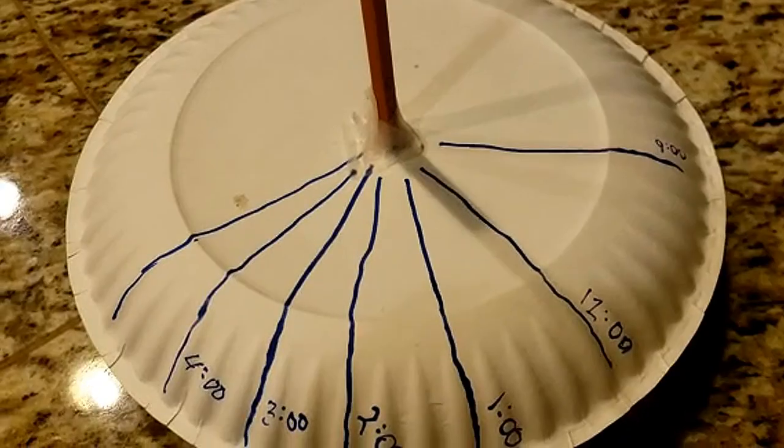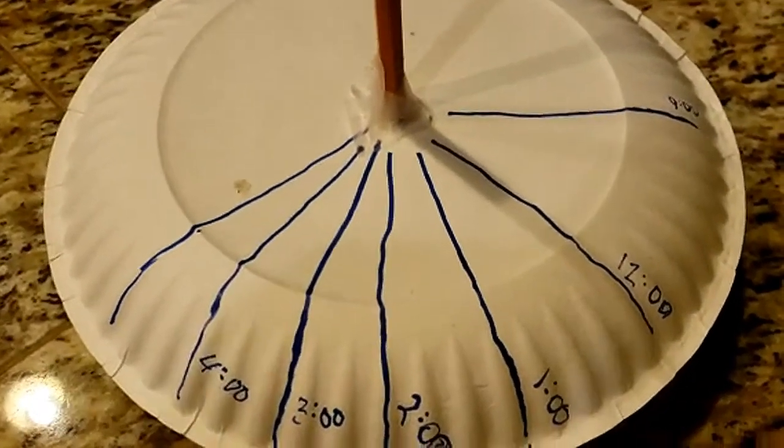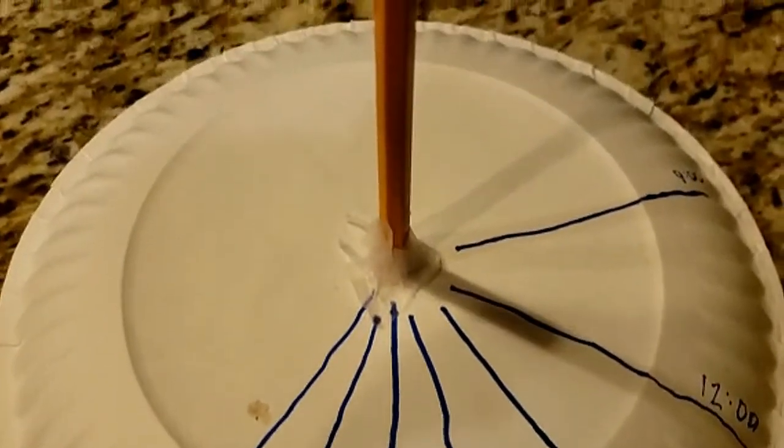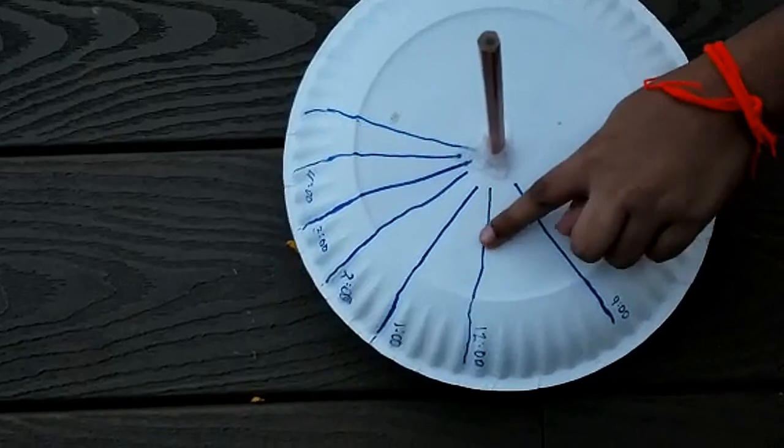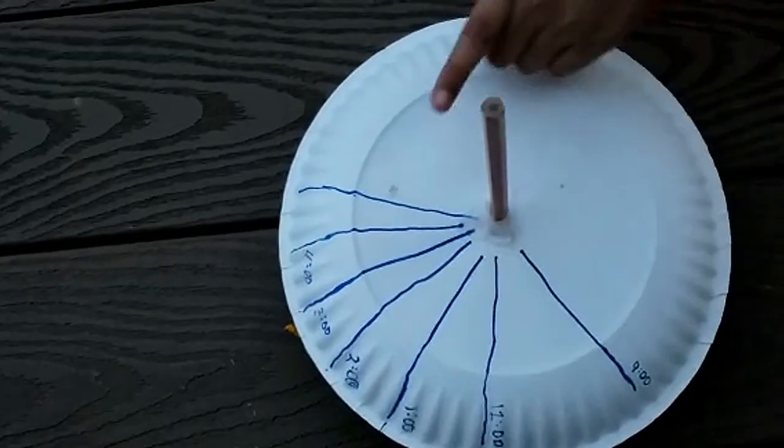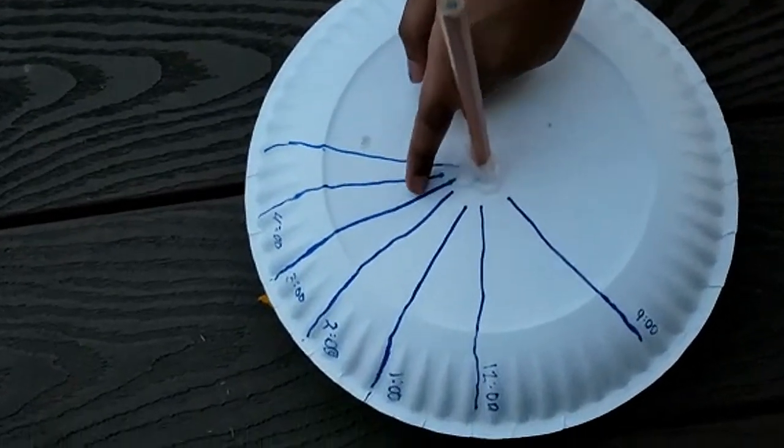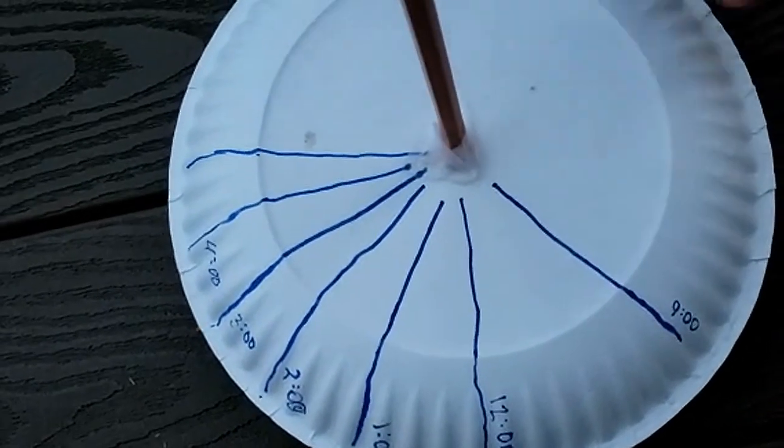When the shadows move across the surface of the earth, our pencil has a shadow of its own too. So wherever the shadow of the pencil falls, that's where you mark your line, and that's how you can tell which hour it is.